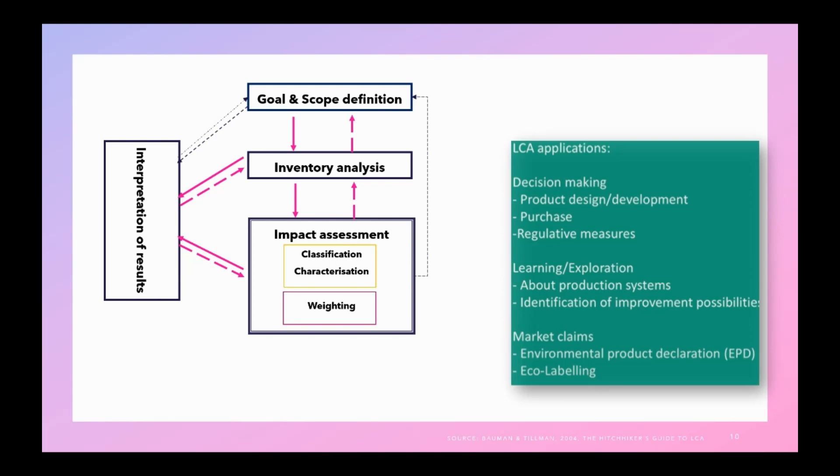And the last one, maybe not the last one but the most important one, is also the market claim. For example, in case of EPD, you develop the environmental product declaration to market the environmental efficiency of your product. And the LCA could also be used for eco-labeling, which might not be easy.